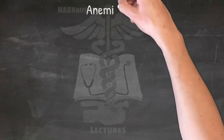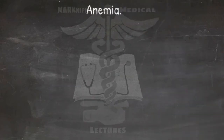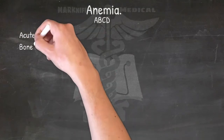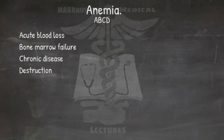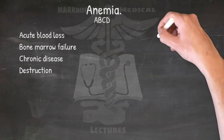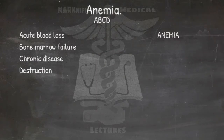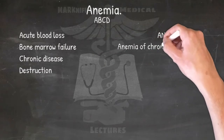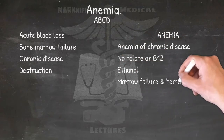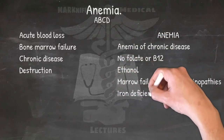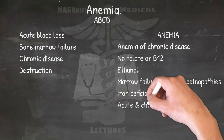Anemia — normocytic causes: ABCD — Acute blood loss, Bone marrow failure, Chronic disease, and Destruction (hemolysis). A simplified mnemonic of causes of anemia is ANEMIA itself: Anemia of chronic disease, No folate or B12, Ethanol, Marrow failure, Hemoglobinopathies, Iron deficient, Acute and chronic blood loss.